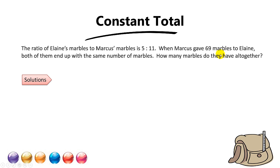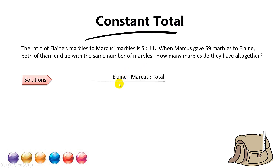Do you know why? It's an internal transfer. When Marcus gives Elaine the marbles, Marcus's marbles decrease by 69 while Elaine's marbles increase by 69. But does the total change? No, it doesn't. So therefore, this falls under Constant Total. Since the total is unchanged, let's find the total of 5 and 11, which is 16.